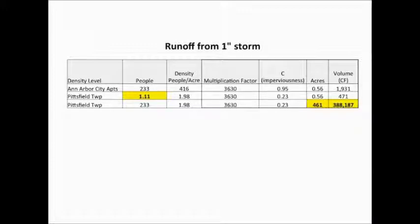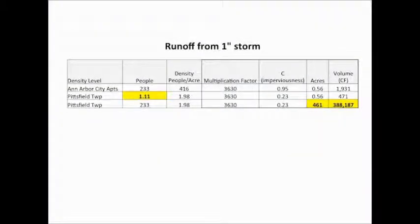I'm going to skip that one in case we need to go back to it. So what I like to do is just compare these. If you take a look at Ann Arbor City apartments, 233 people, 416 people per acre. So if you want to figure out how much runoff you get from a one-inch storm event, it's a pretty simple calculation. There's a factor that you use to turn it from an area to a volume. And then there's how impervious it is. So it's not quite 100% impervious because of rooftop capture and cracks in the sidewalk and that sort of thing. You get 95% imperviousness, and you have a half an acre. If you multiply these three, you get 1,931 cubic feet of stormwater runoff from a one-inch storm event. And just for scale, that's about the size of one of those big gas tankers that fill up the tanks at the gas station. It's a little bit bigger than that.